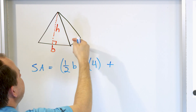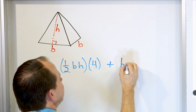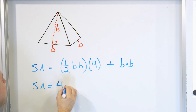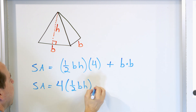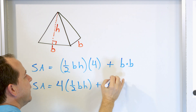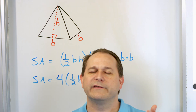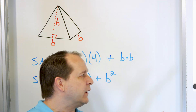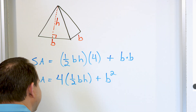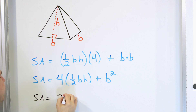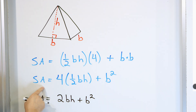When the base is a square, all sides are B, so its area is B times B. We can rearrange: four times one-half times B times H, plus B times B. If we multiply the four and the one-half together, four times one-half is two. So we can write it as 2BH plus B squared. In your book, you'll probably see this equation: 2BH + B².